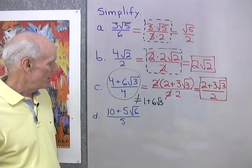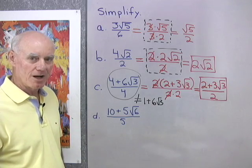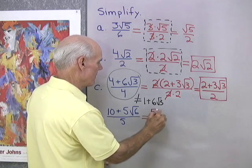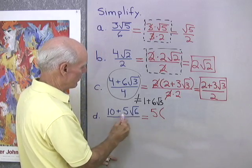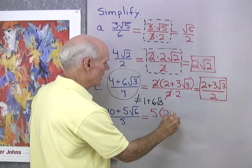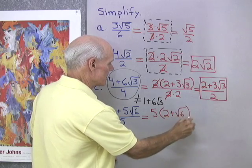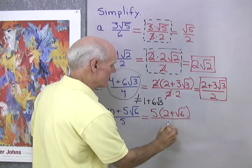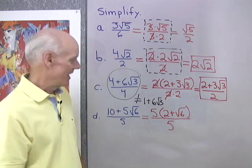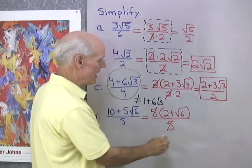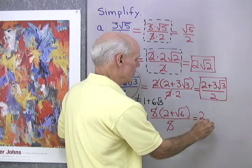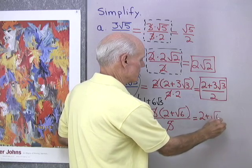Similar problem right here. It looks like we have a 5 common to the numerator and denominator. Let's factor the 5 out of the numerator. What I get when I factor 5 from these two terms is 2 plus square root 6. In the denominator, I just have that factor of 5. Now I'll divide the common factor out, and what's left is 2 plus square root 6.